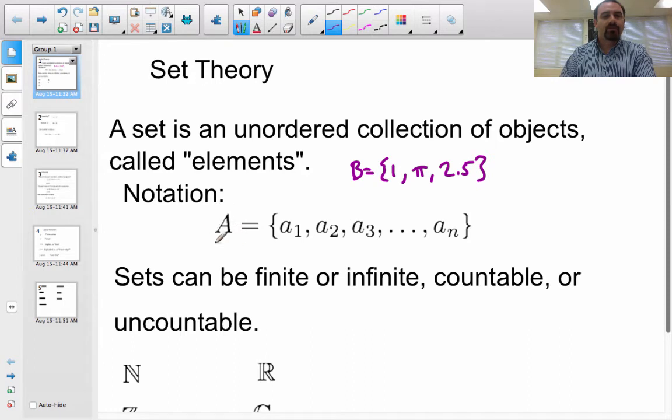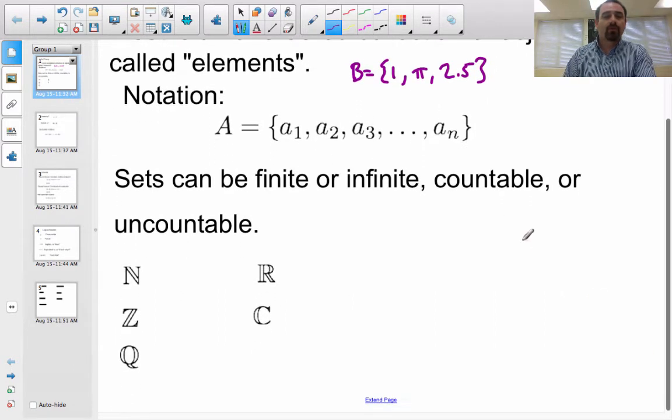So, an arbitrary set is going to be denoted typically by a capital letter. And the elements in the set will be denoted with the lowercase version of the same letter and subscripts. Separated by commas and these curly braces at the ends. Sets can be either finite or infinite, countable or uncountable. And countability, we can talk about that more at length later. Countable and uncountable are both considered infinite.